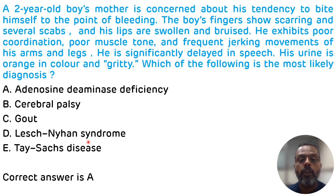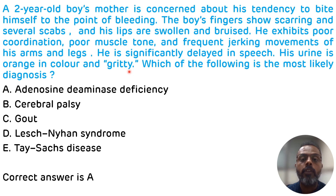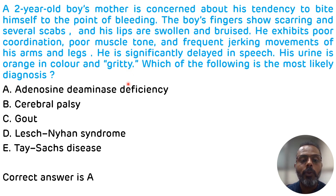The orange color and gritty appearance of the urine is due to excretion of dissolved uric acid and precipitation of sodium urate crystals in the urine. Remember: whenever a child presents with self-mutilation behavior, developmental delay, neurological symptoms, and increased uric acid production, the answer is Lesch-Nyhan syndrome.